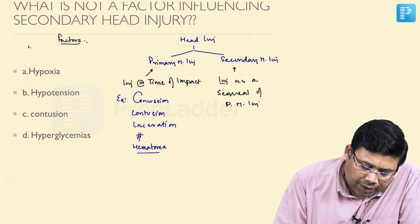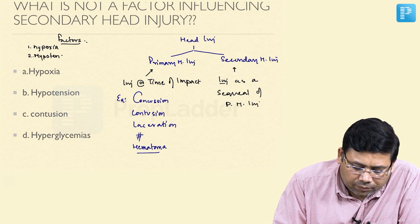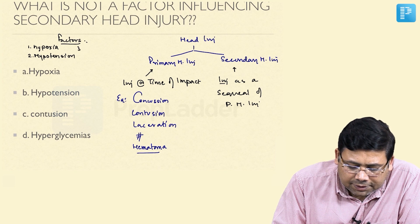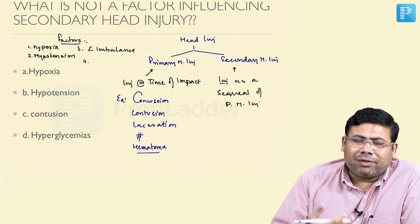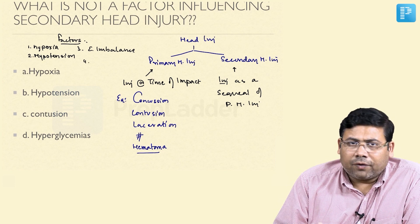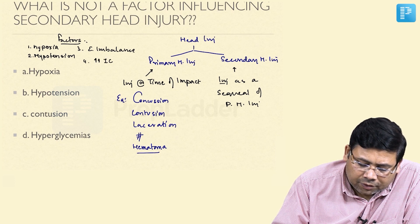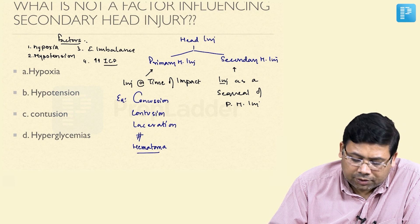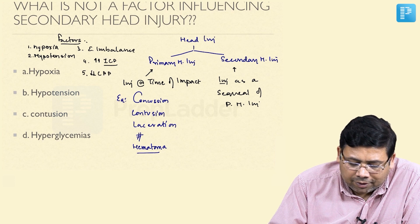The first factor is hypoxia. Second is hypotension. Third is electrolyte imbalance. Fourth is hypercapnia — which is also related to hypoxia. Fifth is increase in intracranial pressure, i.e., intracranial hypertension. And sixth is decrease in CPP (cerebral perfusion pressure).